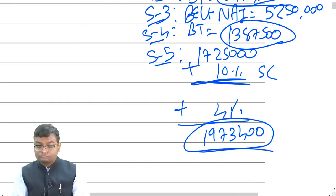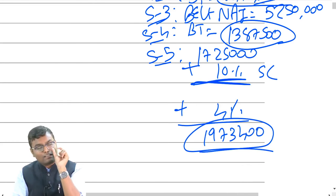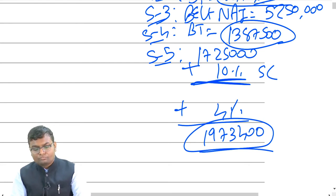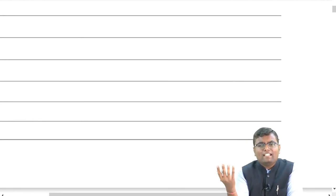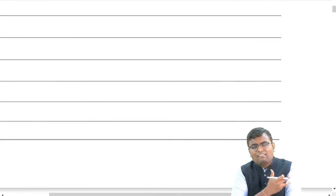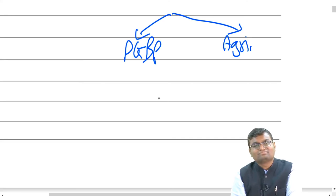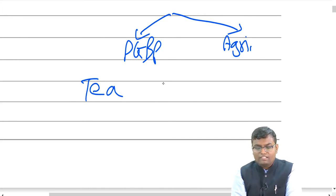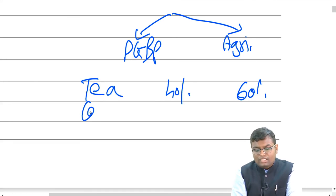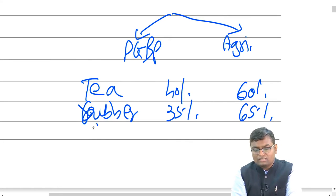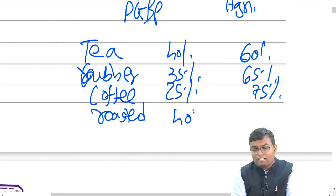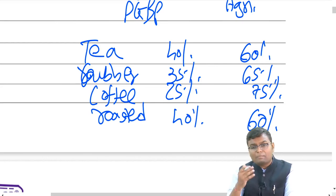For rebate and surcharge, always look at the total taxable income only — do not add agricultural income. Now, in PGBP, when there are both agricultural and business operations and you sell the combined product, some portion is PGBP income (taxable) and some is agricultural income (exempt). For tea: 40% PGBP, 60% agriculture. For rubber: 35% PGBP, 65% agriculture. For coffee grown and cured: 25% PGBP, 75% agriculture. For coffee grown, cured, and roasted: 40% PGBP, 60% agriculture. These percentages are specified by the Act itself.